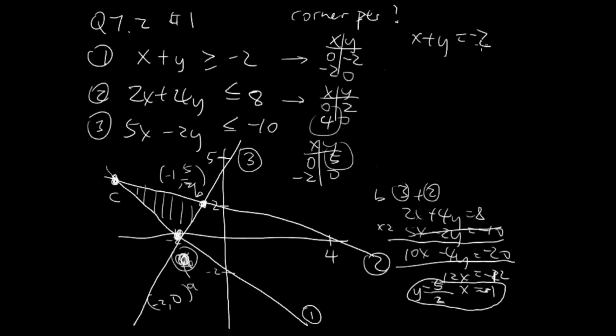We have x plus y equals negative 2 and 2x plus 4y equals 8. Take the first one times negative 2: negative 2x minus 2y equals 4. Add them: 2y equals 12, so y equals 6. If y equals 6, we have negative 8, so x is negative 8. So this point is negative 8 and 6.